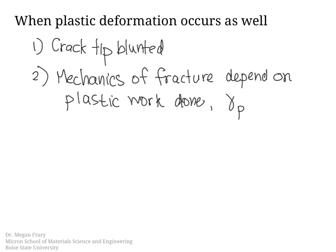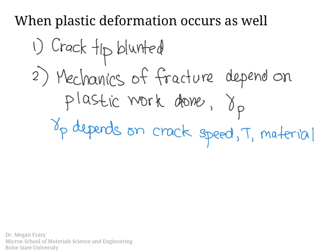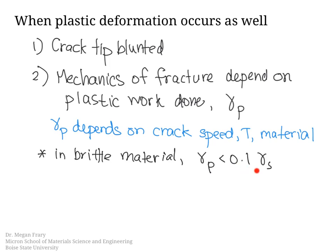Gamma_p depends on the crack speed, the temperature, and the material. If we have a brittle material, then the Griffith Criterion mostly holds because the plastic work done is small — less than maybe 10% of the surface energy. If the material is not brittle and we do have plastic deformation occurring at the crack tip, then we need to take both the surface energy and the plastic work done into account in the energy balance of crack propagation. We do that by using gamma_s plus gamma_p instead of just the surface energy term.